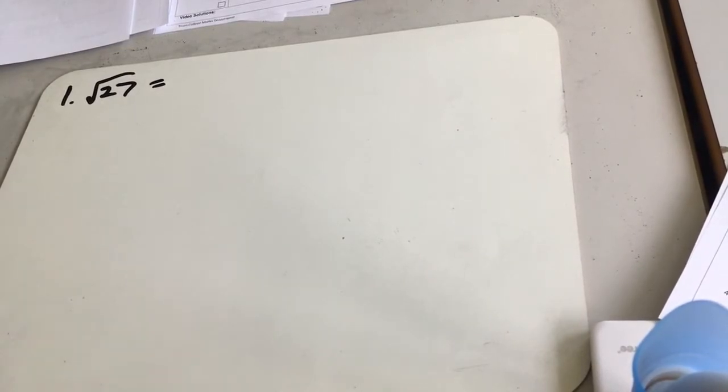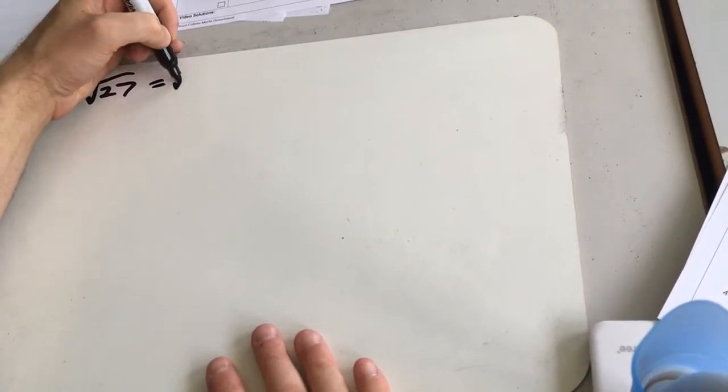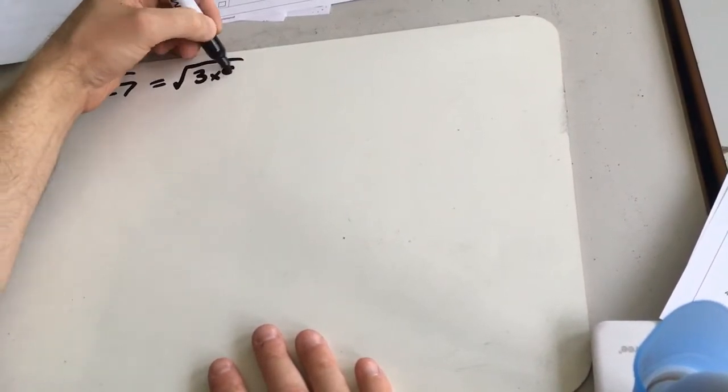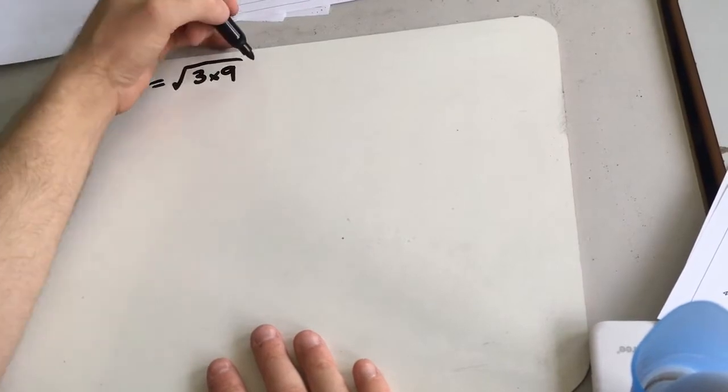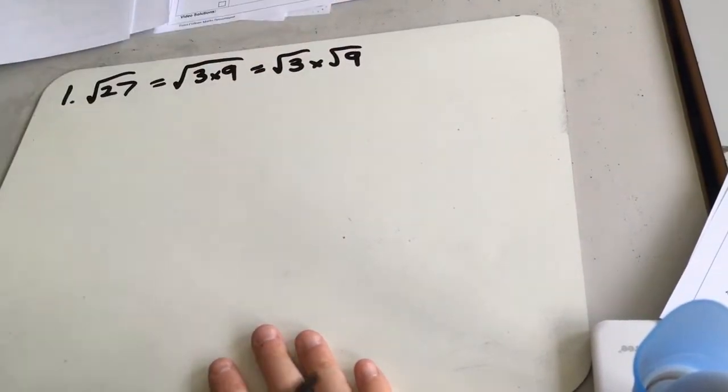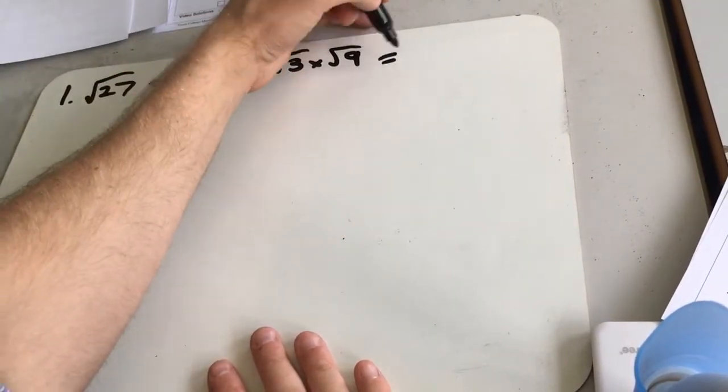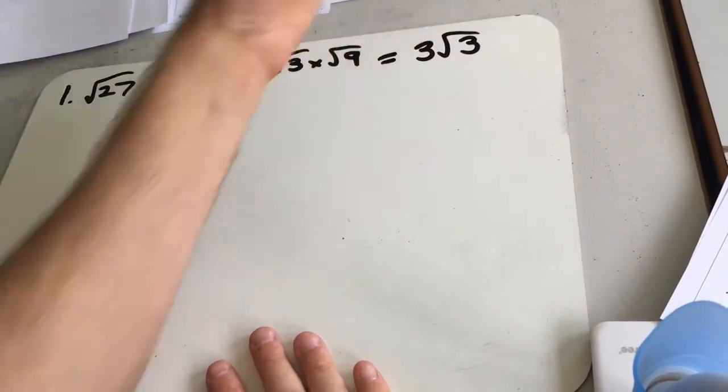But you can do it in steps if you do get stuck. So I know 27 is the same as 3 times 9, so I can write 3 times 9 there instead of 27. We can then split this up into root 3 times root 9. And then because 9 is a square number, the square root of 9 is 3, so we can write this one out as 3 root 3.